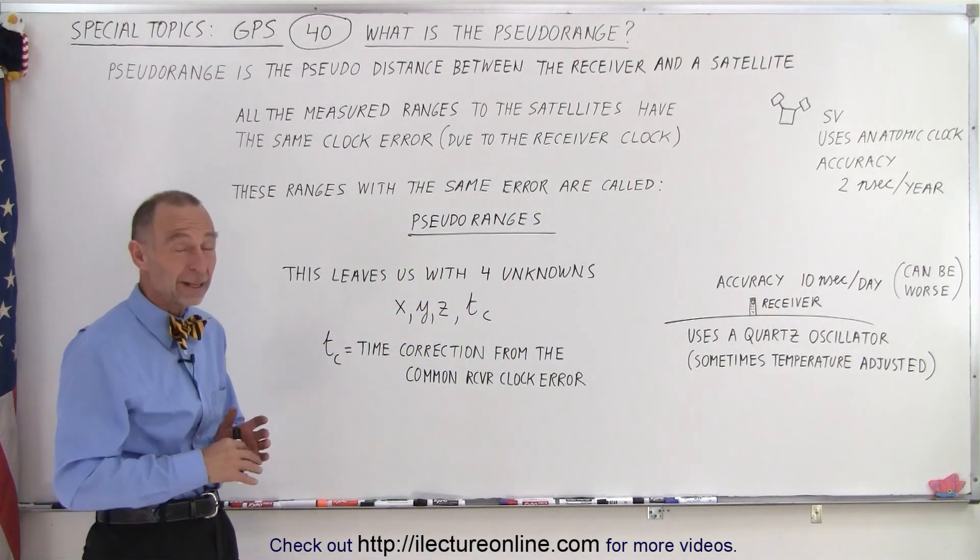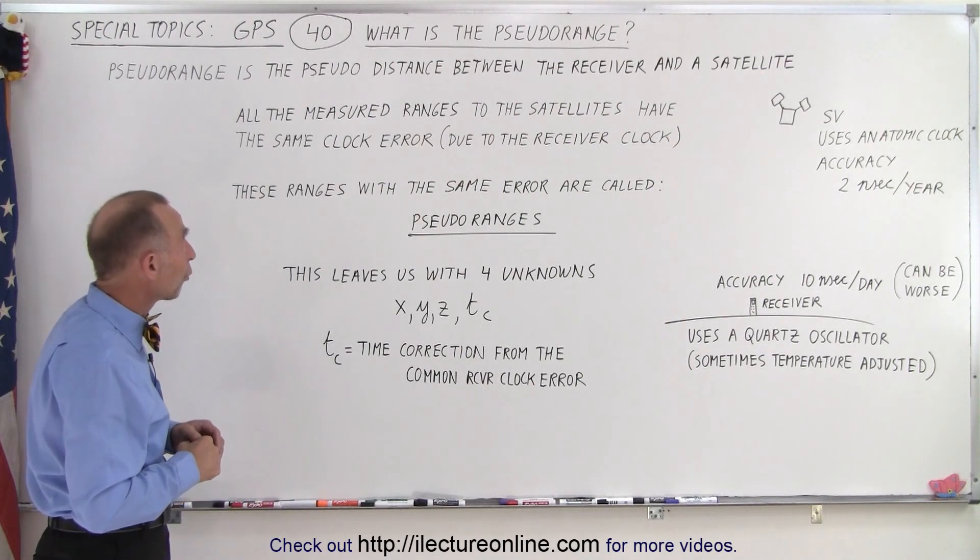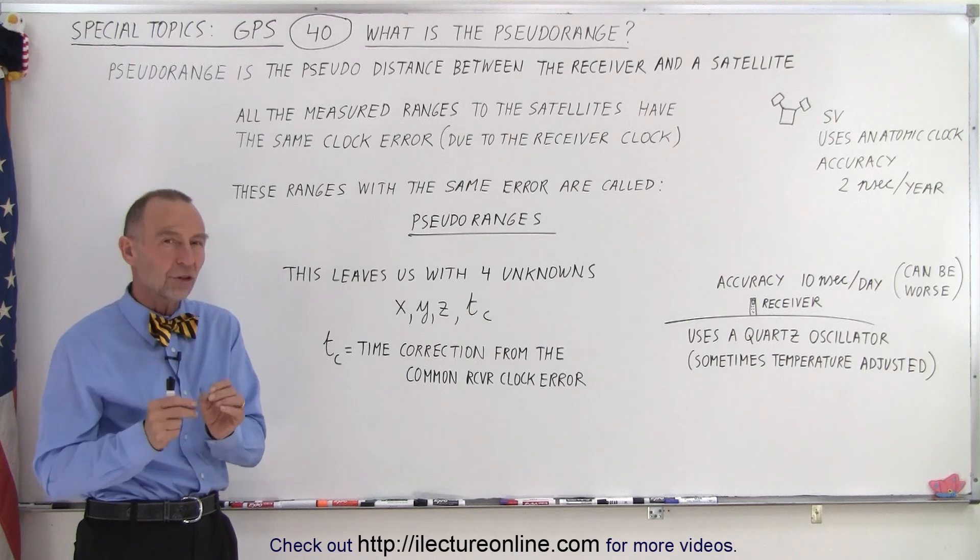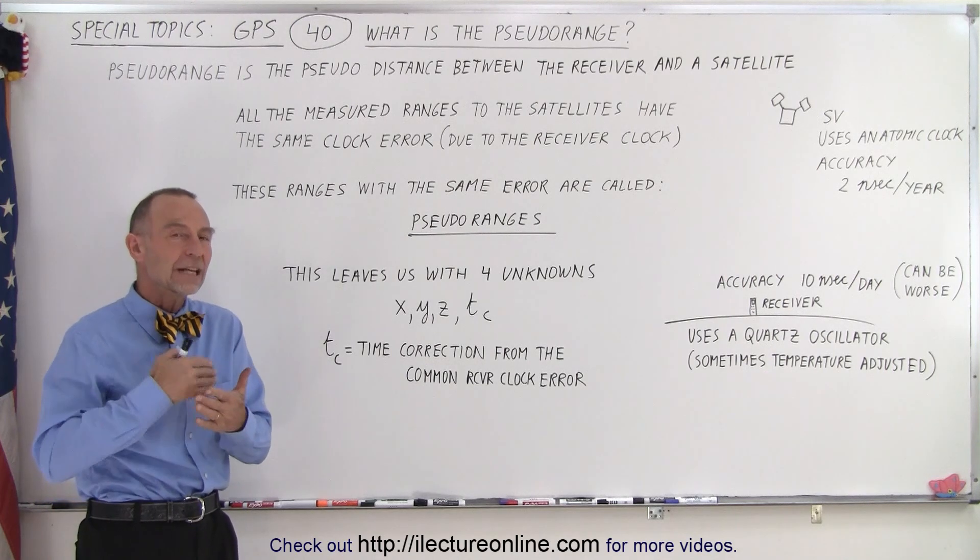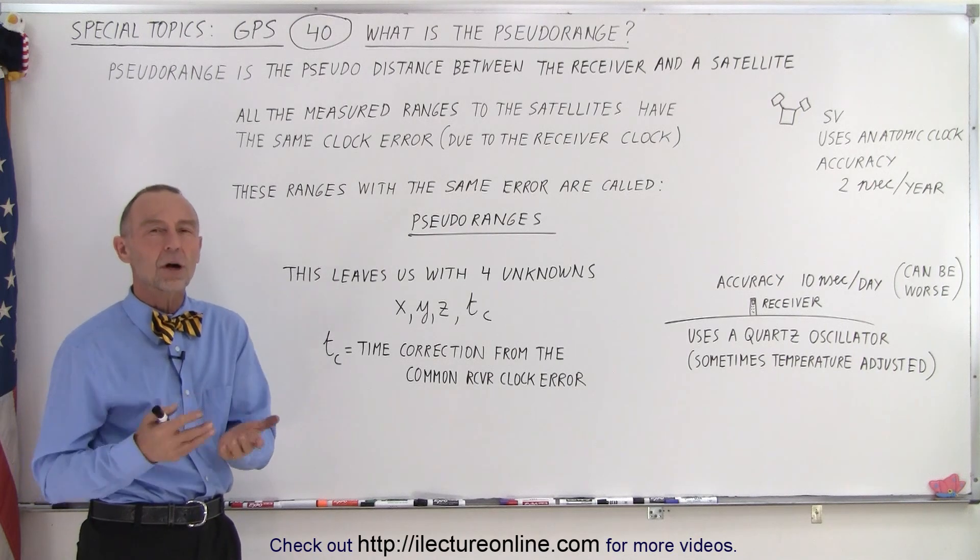Usually we can track as many as 10, sometimes 11 or 12 satellites. And so therefore it's the pseudo distance, not the real distance, not the geometric distance, but an initial calculated distance ignoring the clock errors.